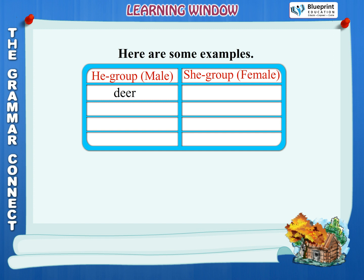Deer, doe. Rooster, hen. Peacock, peahen. Tiger, tigress.